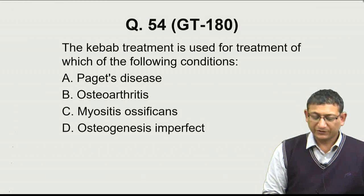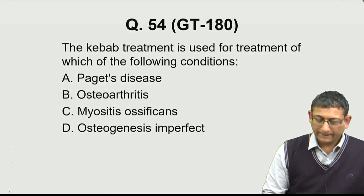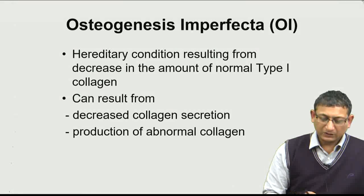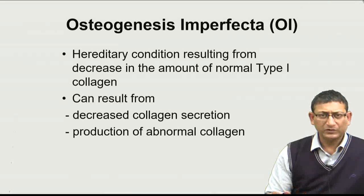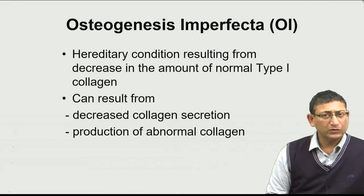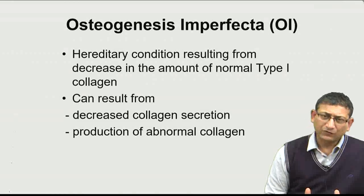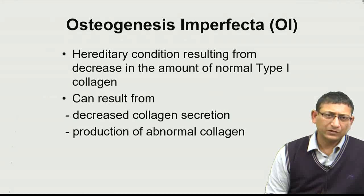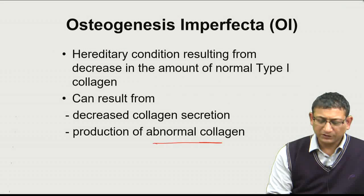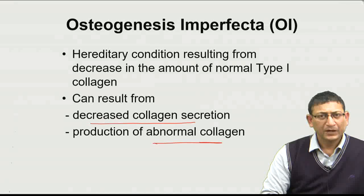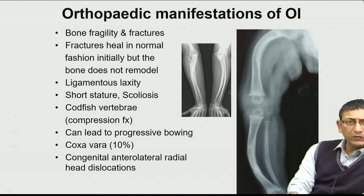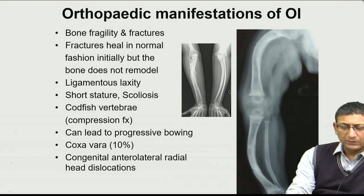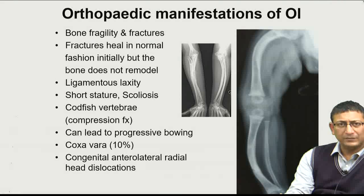Question 54: Kebab treatment is used in the treatment of which condition? It is used in osteogenesis imperfecta to correct deformities. Osteogenesis imperfecta is a hereditary condition resulting from faulty or decreased formation of type 1 collagen — either abnormal or decreased production — leading to numerous bony deformities. The bones become fragile and prone to fractures.